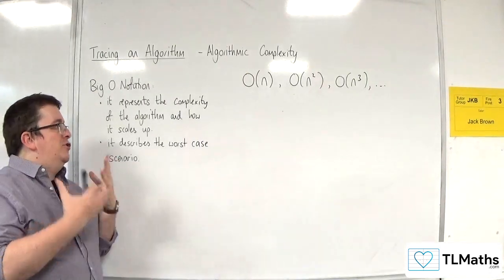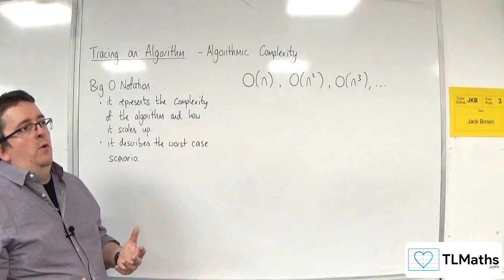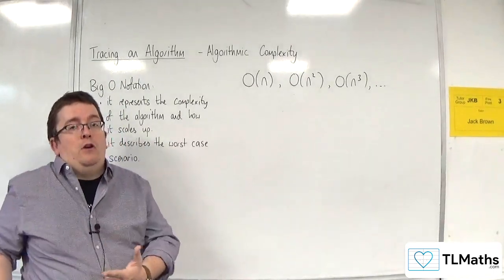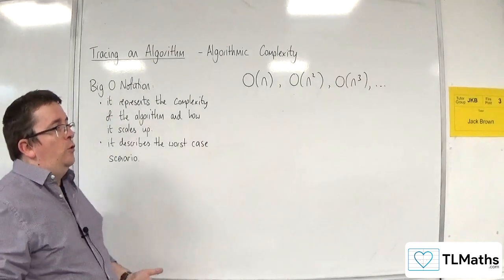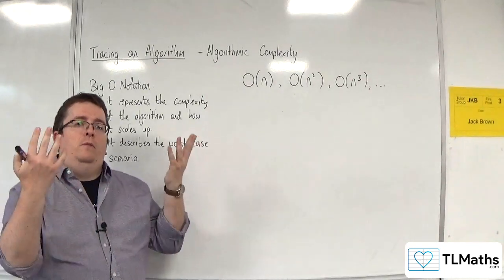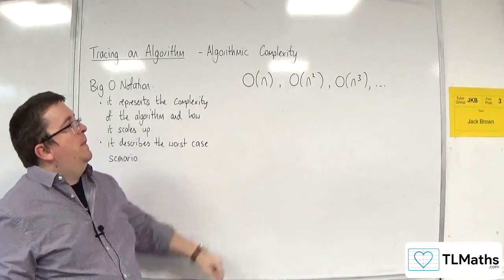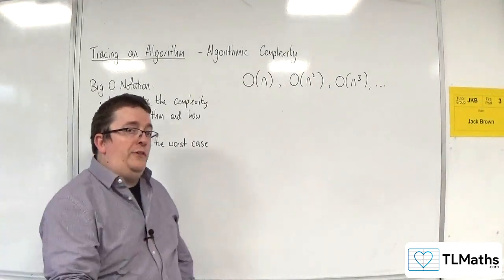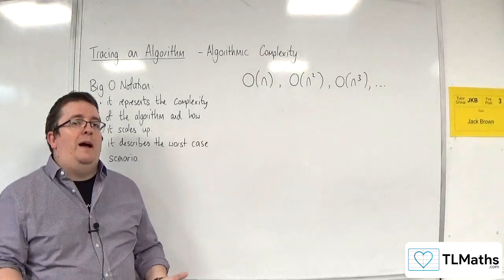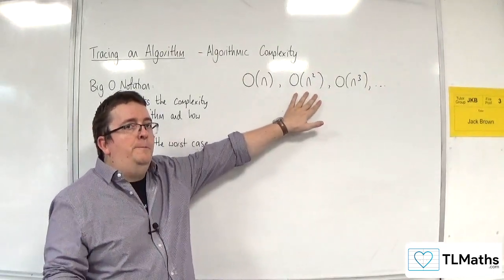Essentially, the way that you should think about it is it describes the worst-case scenario. For certain algorithms, if we take, for example, the bubble sort algorithm, which is a sorting algorithm that sorts letters or numbers into ascending or descending order. Its best-case scenario is if the list of numbers is already in order, and that is order of n. However, its worst-case scenario, when the numbers are complete reverse order, is order of n squared. So we would refer to bubble sort as having order of complexity of n squared, or quadratic complexity, because that's the worst-case scenario.